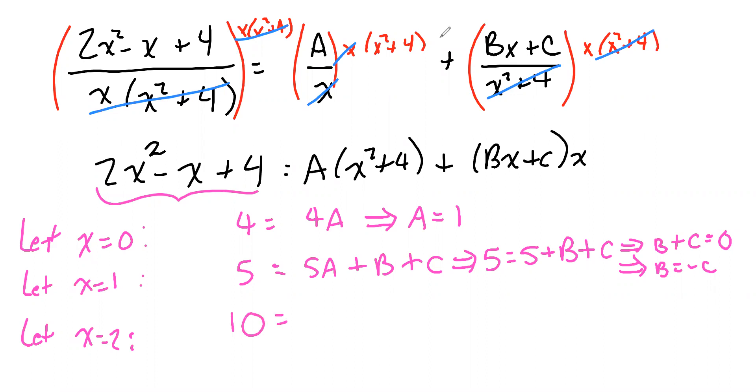And if we substitute 2 here, we get 2² is 4. 4 + 4 is 8. And 8A plus, and if we put in 2 for the x here, it's in two places, we get 2b + c times 2.